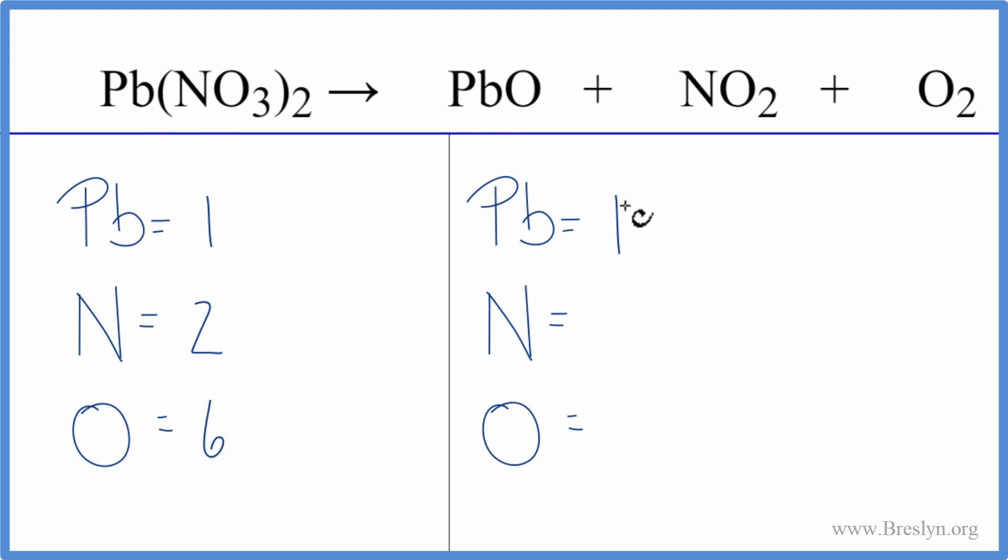On the product side, we have the one lead, the one nitrogen, and then oxygens, we have one plus two, that's three, plus two, three plus two, that's five, so we have five oxygens.